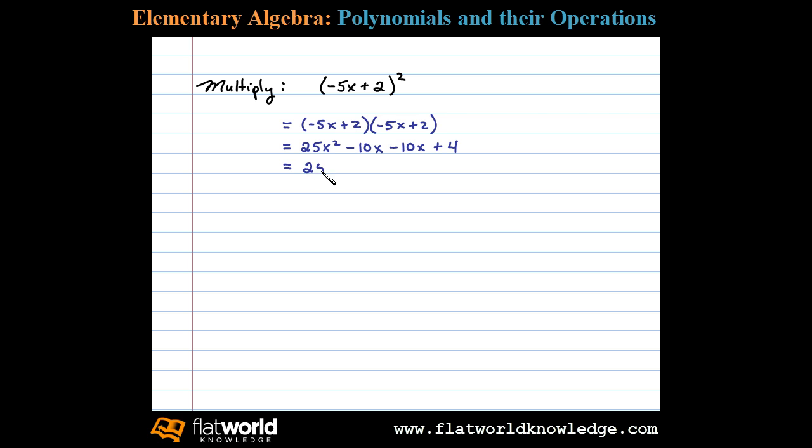After which we then combine like terms and we're left with 25x squared minus 20x plus 4.